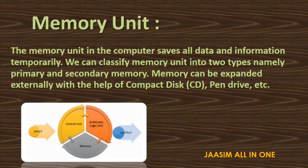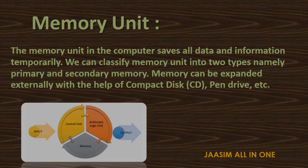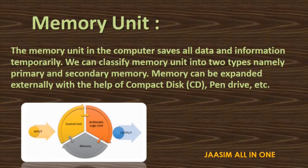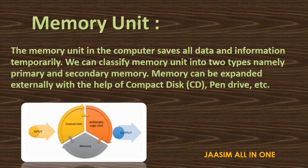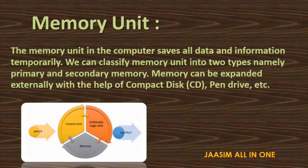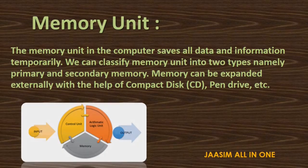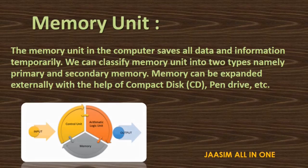Memory Unit: The Memory Unit in the computer saves all data and information temporarily. We can classify Memory Unit into two types: Primary Memory and Secondary Memory. RAMs and ROMs are known as Primary Memory, and all removable storage media are known as Secondary Memory. Memory can be expanded externally with the help of compact disk, pen drive, or memory card.